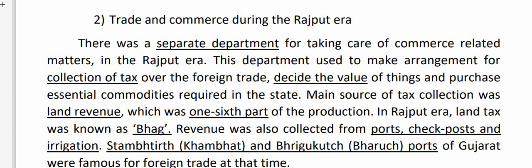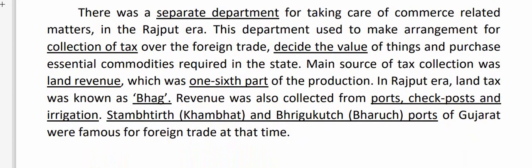There was a separate department for taking care of commerce-related matters in the Rajput era. This department made arrangements for collection of tax over foreign trade, decided the value of things, and purchased essential commodities required in the state. The main source of tax collection was land revenue, which was one-sixth part of the production. In the Rajput era, land tax was known as Bhag. Revenue was also collected from ports, checkposts, and irrigation. Stambhtirth, Khambhat, and Bhrigu Kach (Bharuj) ports of Gujarat were famous for foreign trade at that time.